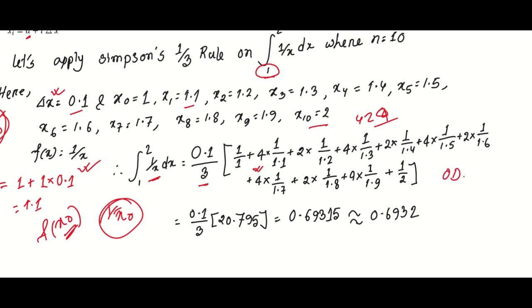For odd-indexed terms, multiply by 4; for even-indexed terms, multiply by 2.